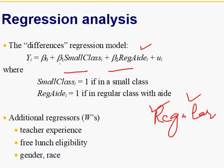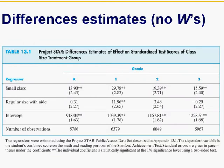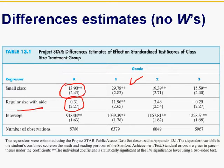Looking at the results: on average, kindergarten students in small classes scored 13 to 14 points more than regular class. Regular class with aide at KG level has not much improvement compared to regular class. At grade 1, when re-randomized, there was a 30 point test score difference between small class size and regular class size. Regular class with aide also showed significant improvement of 12 units. At grade 2, there was a 19 point improvement.